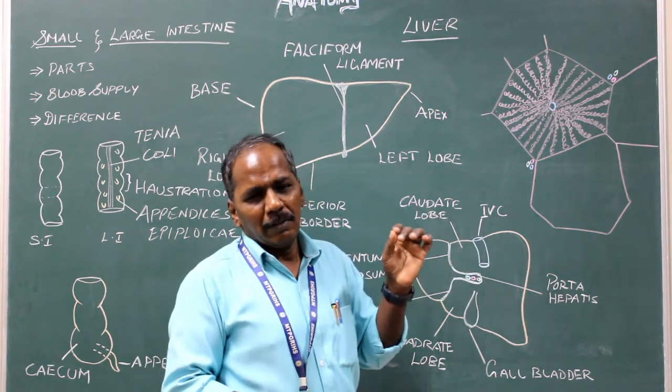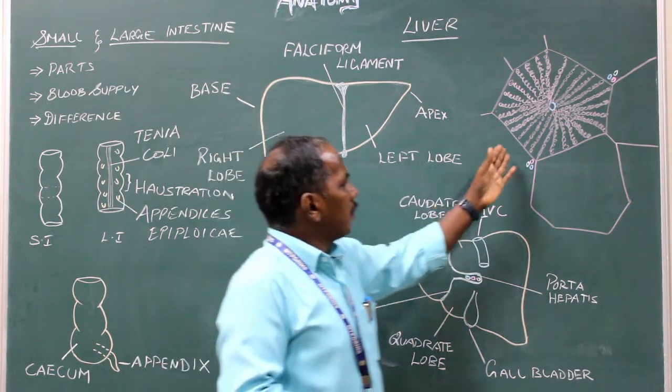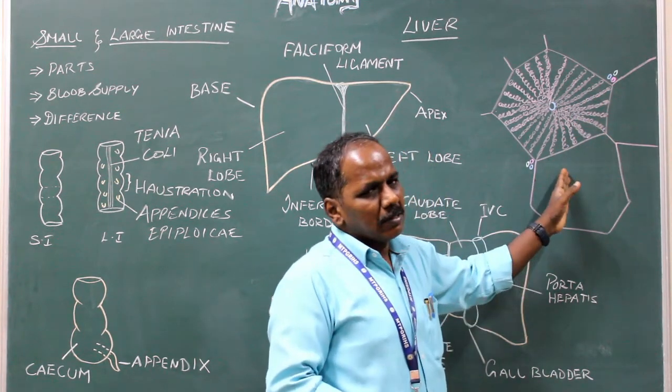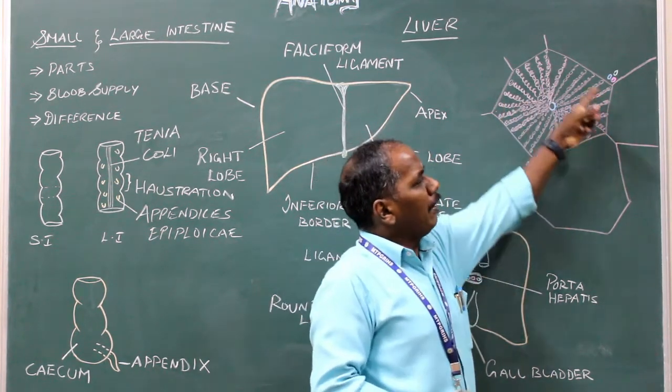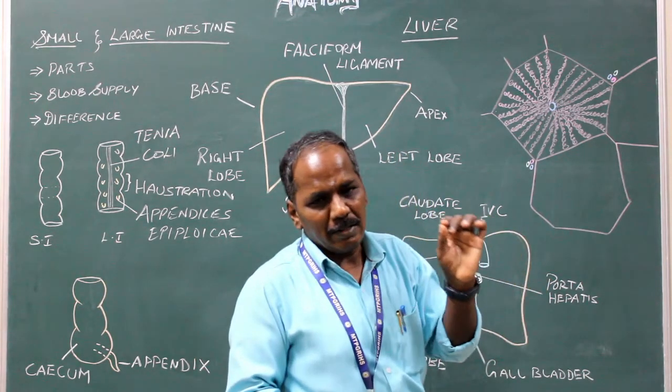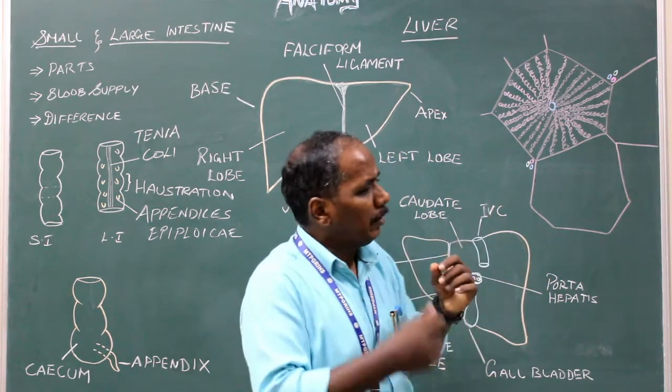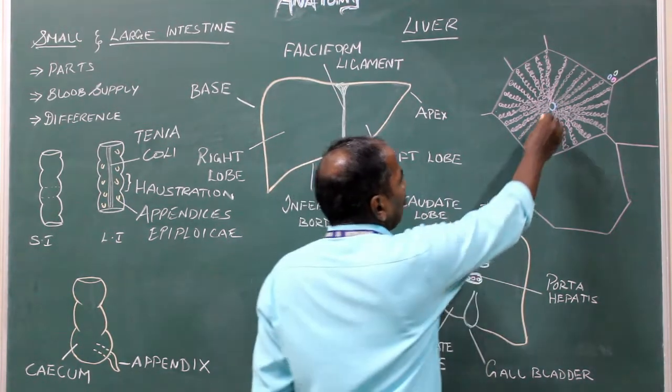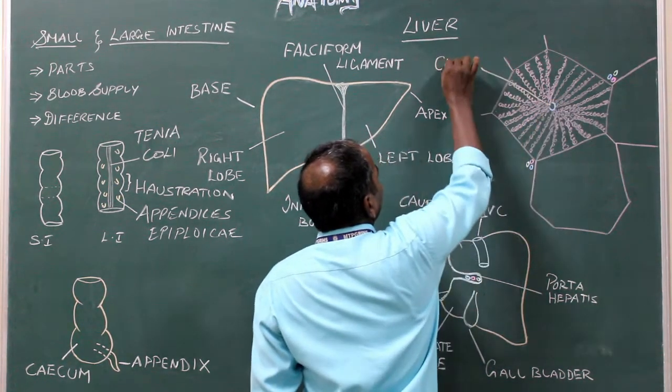Histology of liver: It consists of lobes or lobules, hexagonal in shape. So that is the characteristic feature of the lobe: it is hexagonal in shape. Each lobe has a central vein.